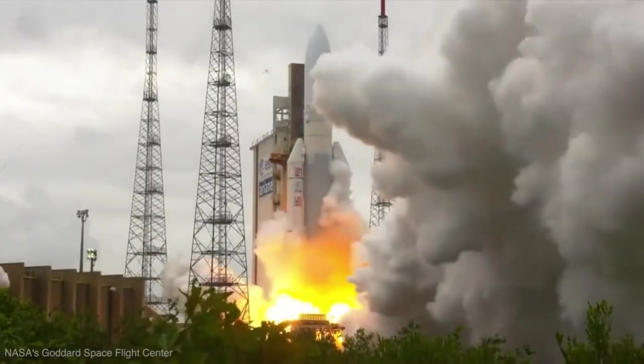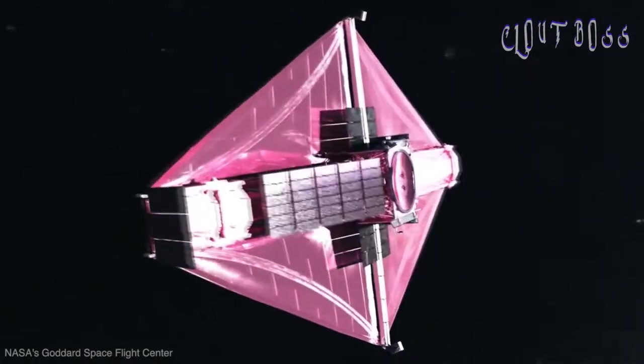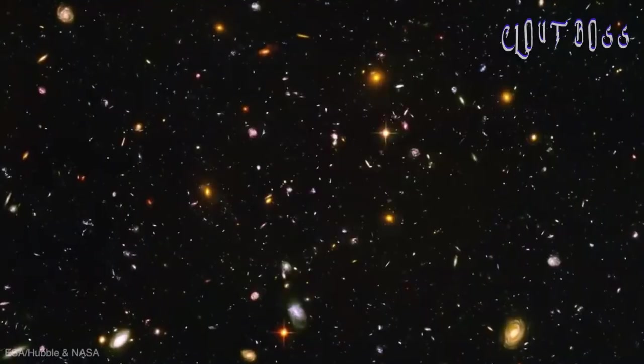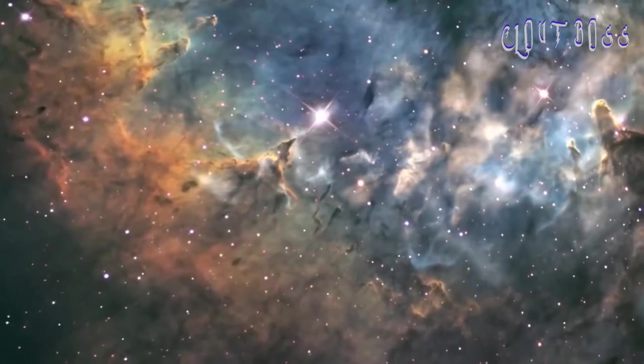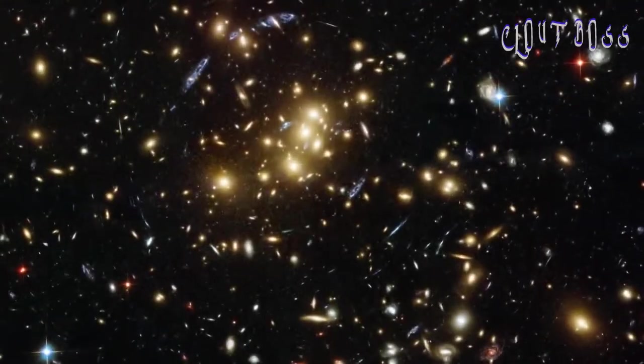The James Webb Space Telescope was launched on a 1.5 million kilometer journey through space. The largest space telescope of its kind and the most powerful ever sent out into the cosmos, Webb is on a mission to explore the farthest corners of the universe.